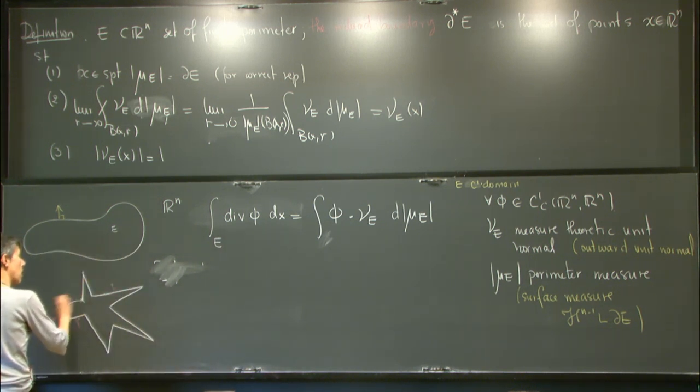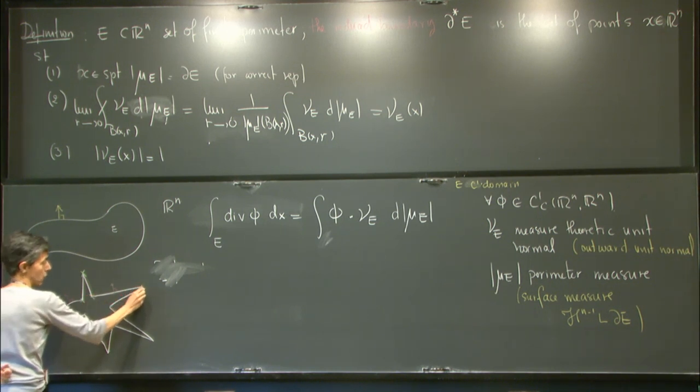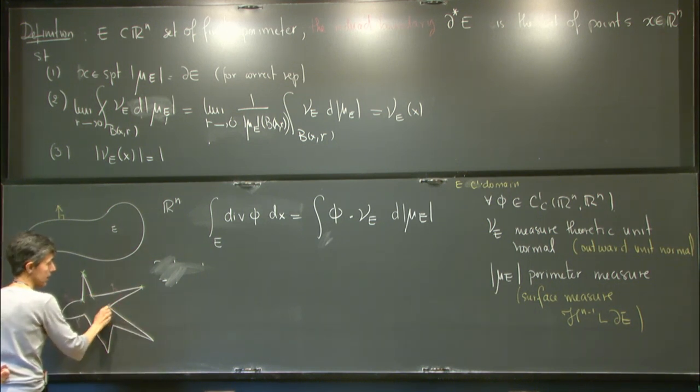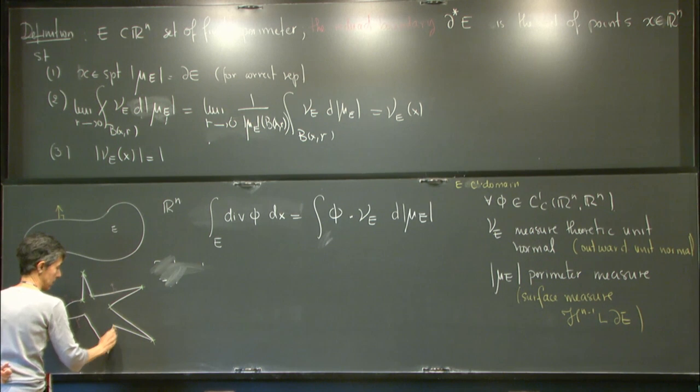These corner points are not in the reduced boundary. We can do a calculation to verify. So these guys with sharp turns are excluded from the reduced boundary.